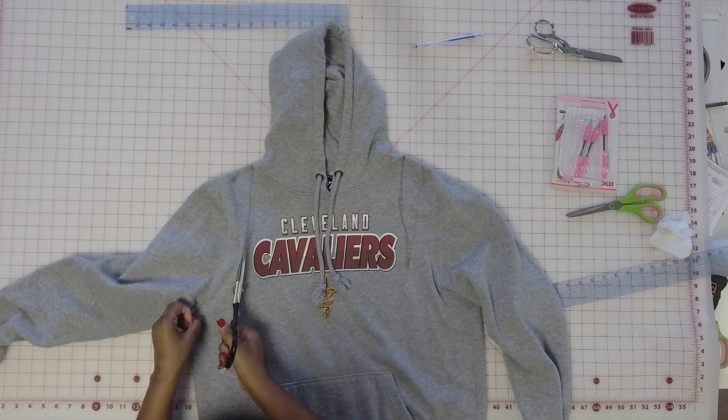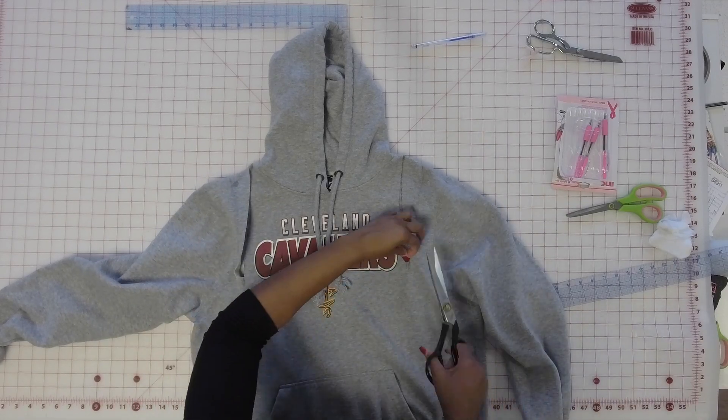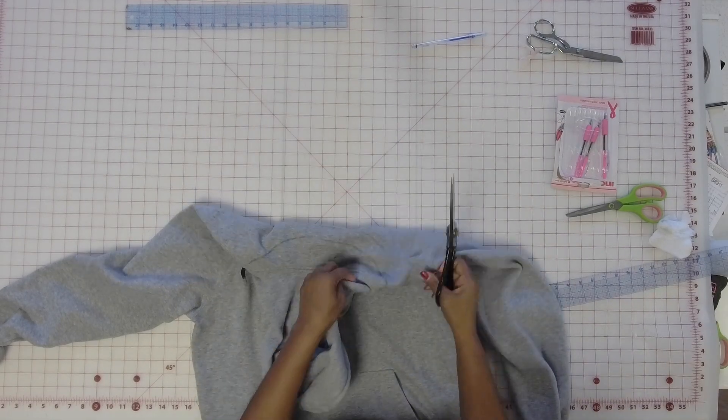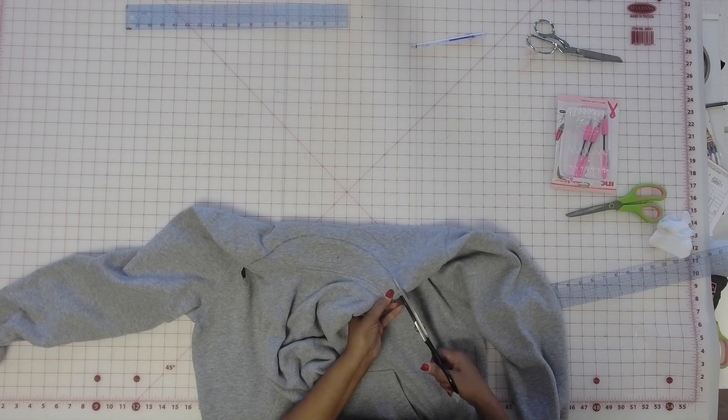So here's what I'm going to do. I went ahead and I marked where I'm going to cut, so I'm just cutting a single layer. I started at the bust point, the bust area, and I just marked it all the way around.